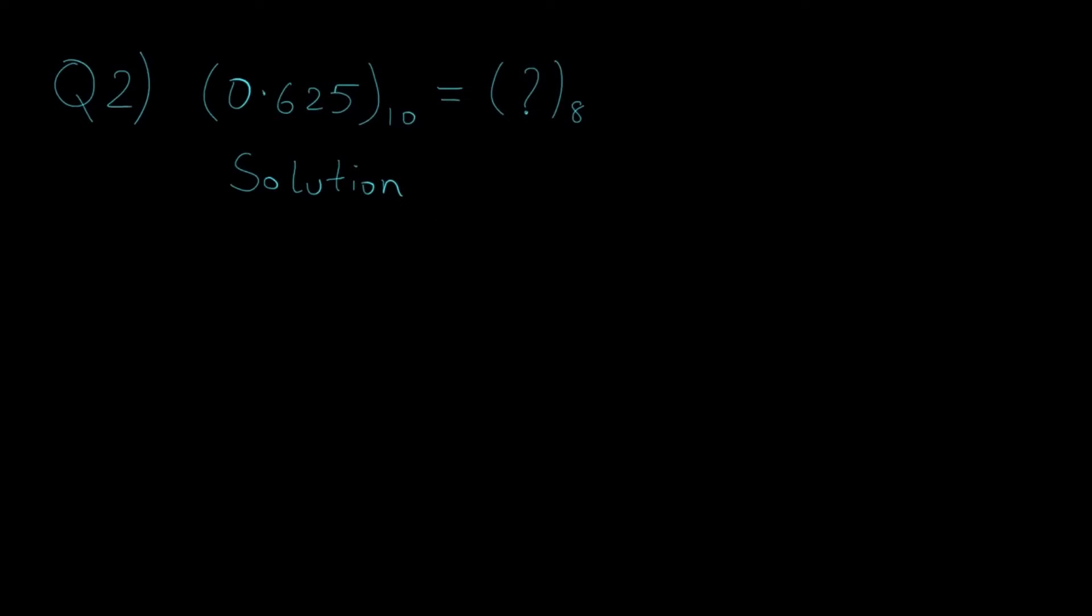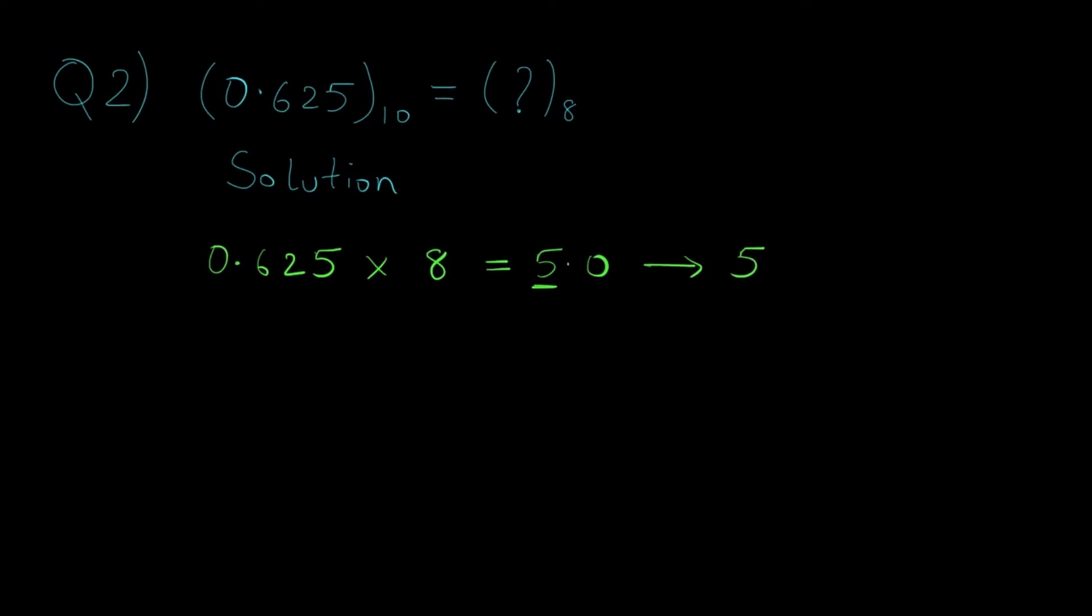In the second question we have a fractional decimal number which needs to be converted to an octal number. So we write the decimal number as it is and multiply it with the base value of the octal number system which is 8, which gives us a result of 5.0. Now we are interested in this value so we write it separately and ignore this value for the next iteration.